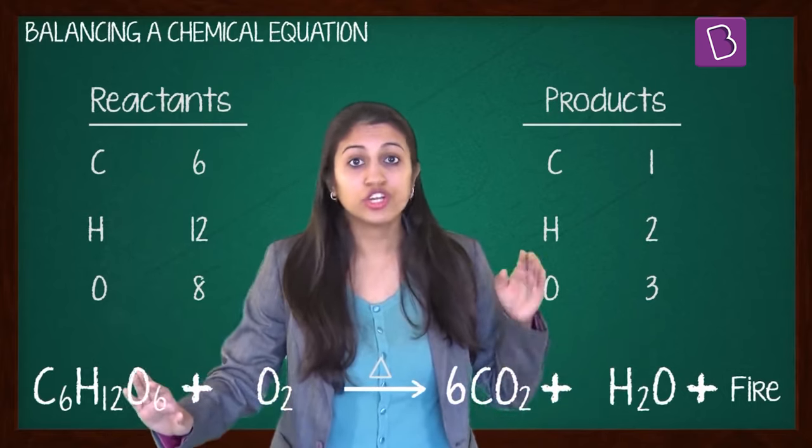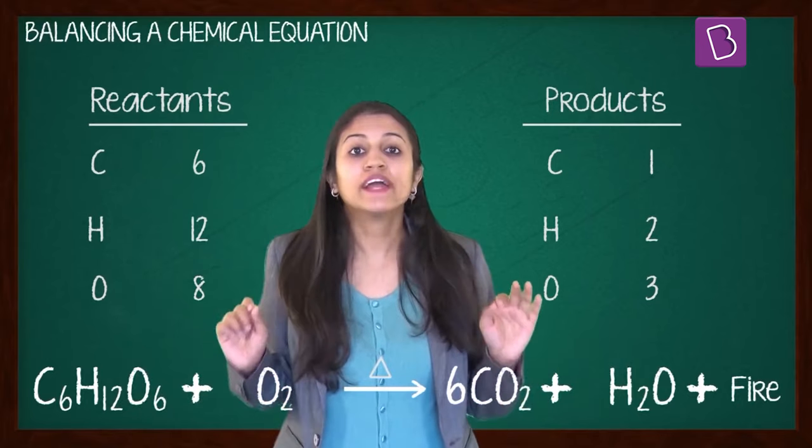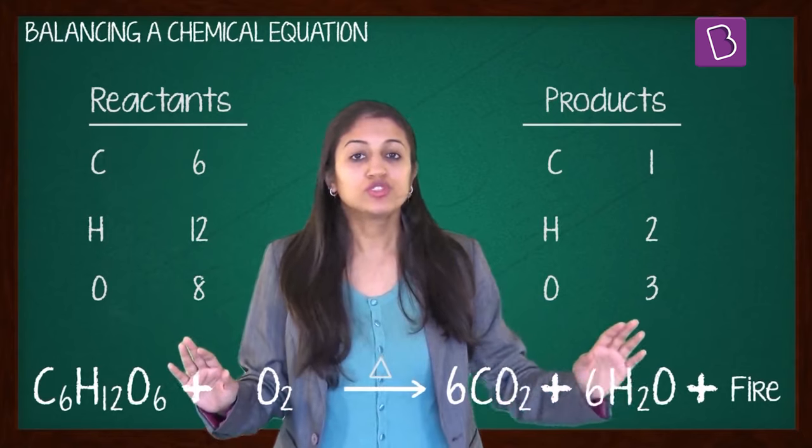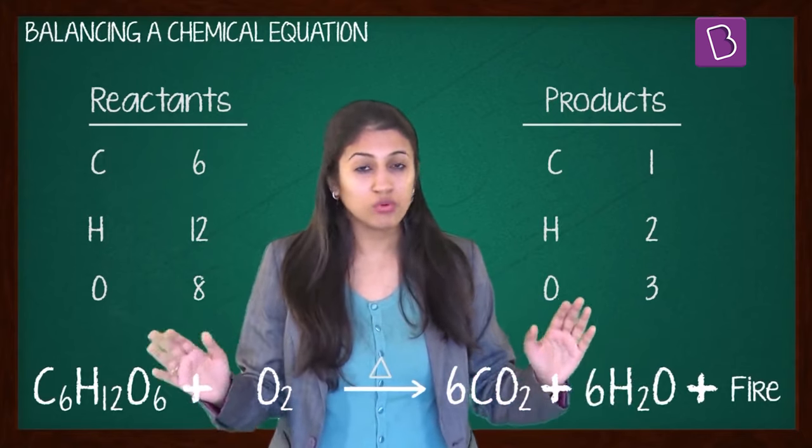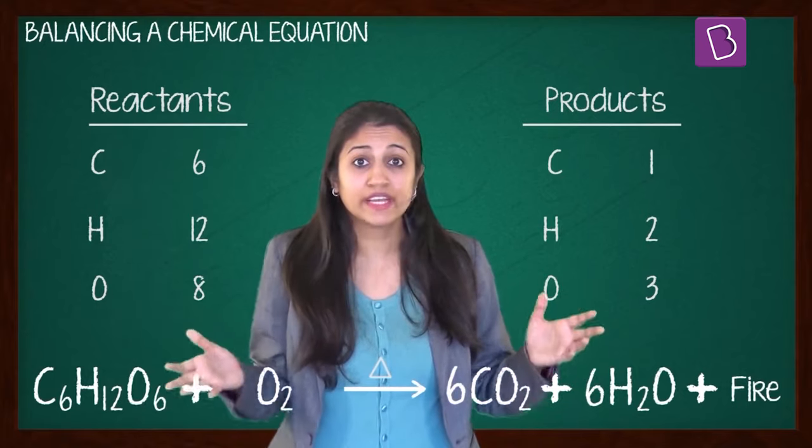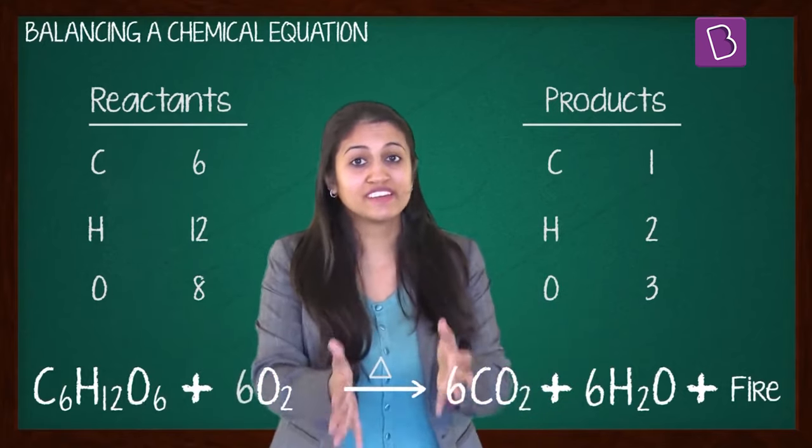There are 12 hydrogen atoms here and only 2 here. So first, let's make hydrogen 12. For that, I'm going to make it 6 molecules of water. So the number of hydrogen atoms on both sides of the equation get balanced. The number of oxygen atoms are also getting balanced. So that's why it's called hit and trial.